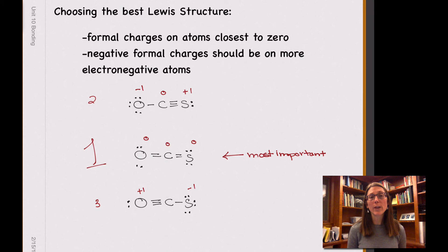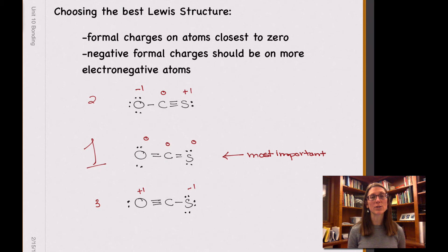So hopefully at this point you feel comfortable determining the formal charge on the atoms within a Lewis dot structure, and that can help you choose which Lewis structures are more important when there is more than one way to draw the Lewis structure for your molecule.